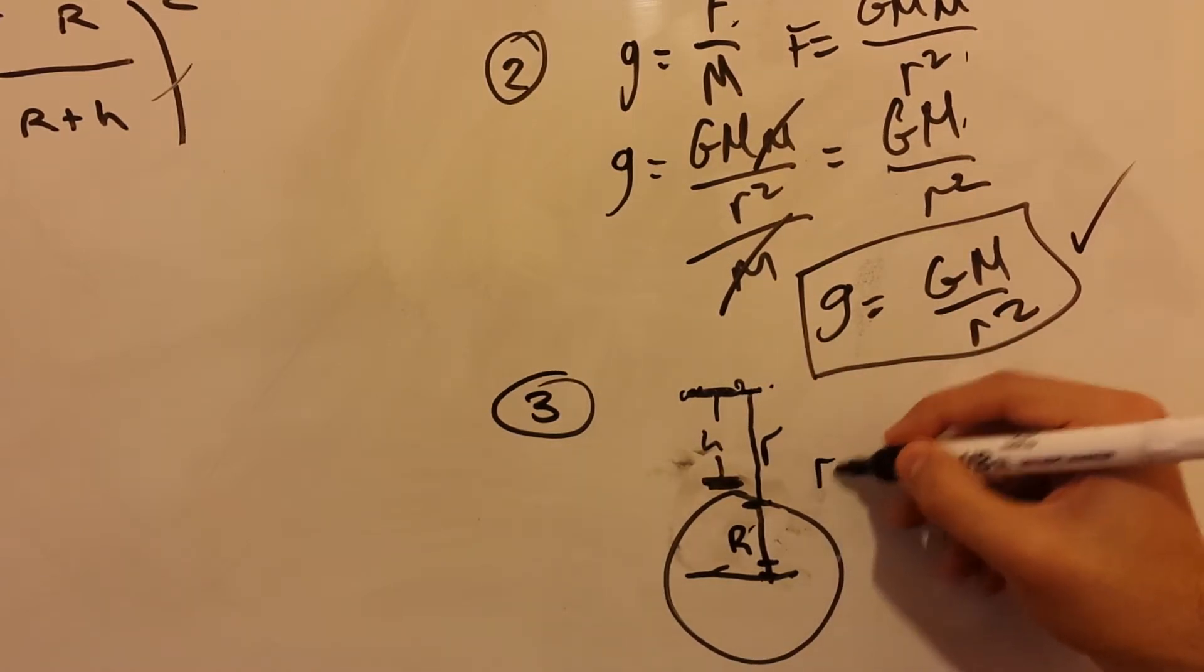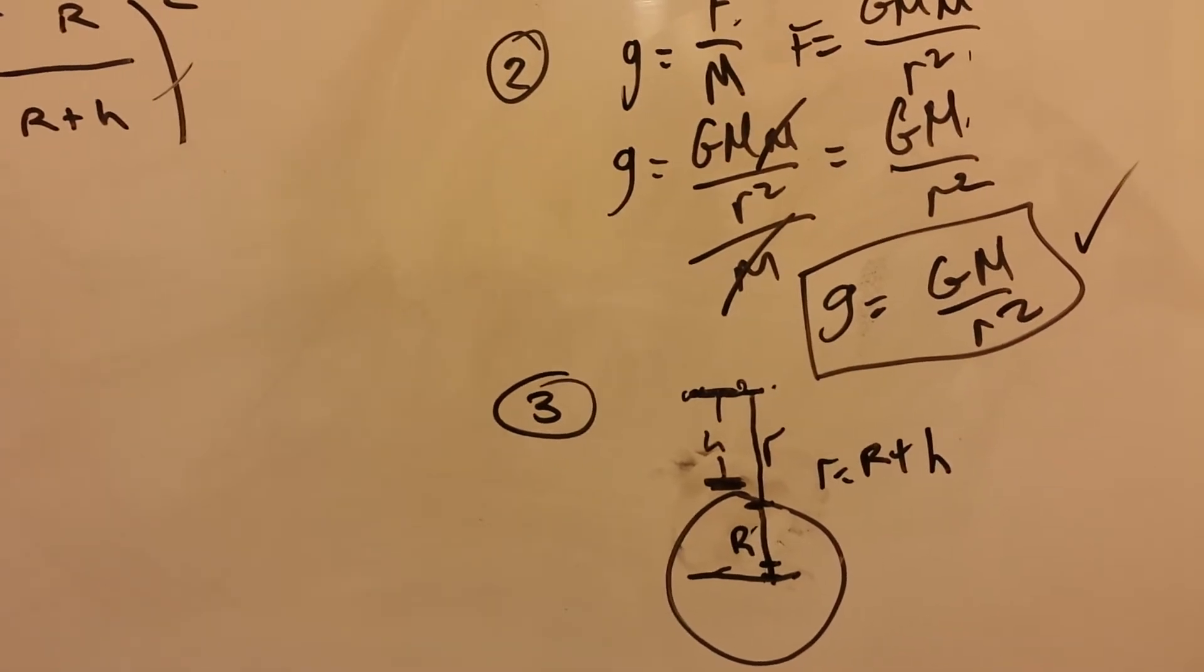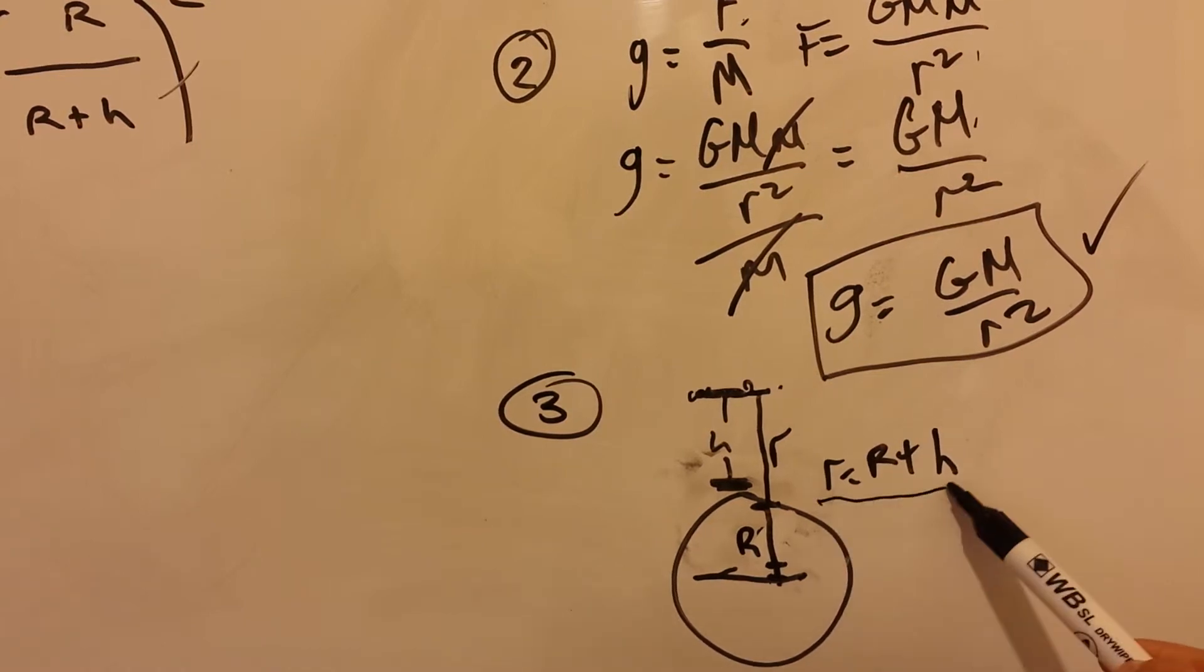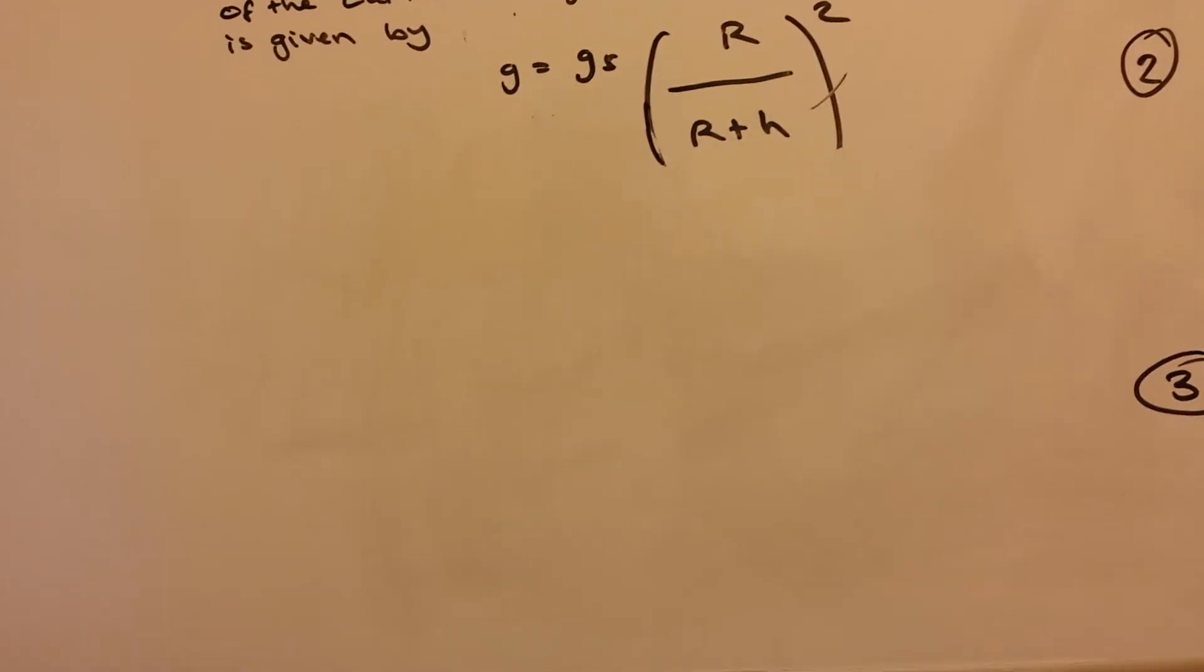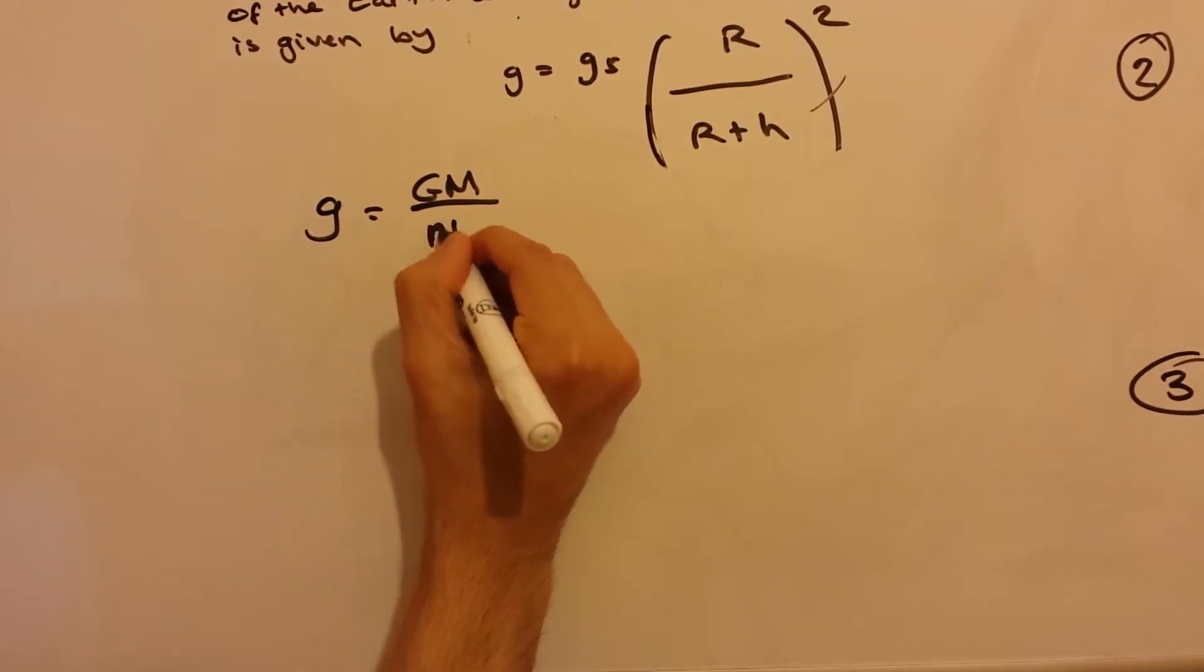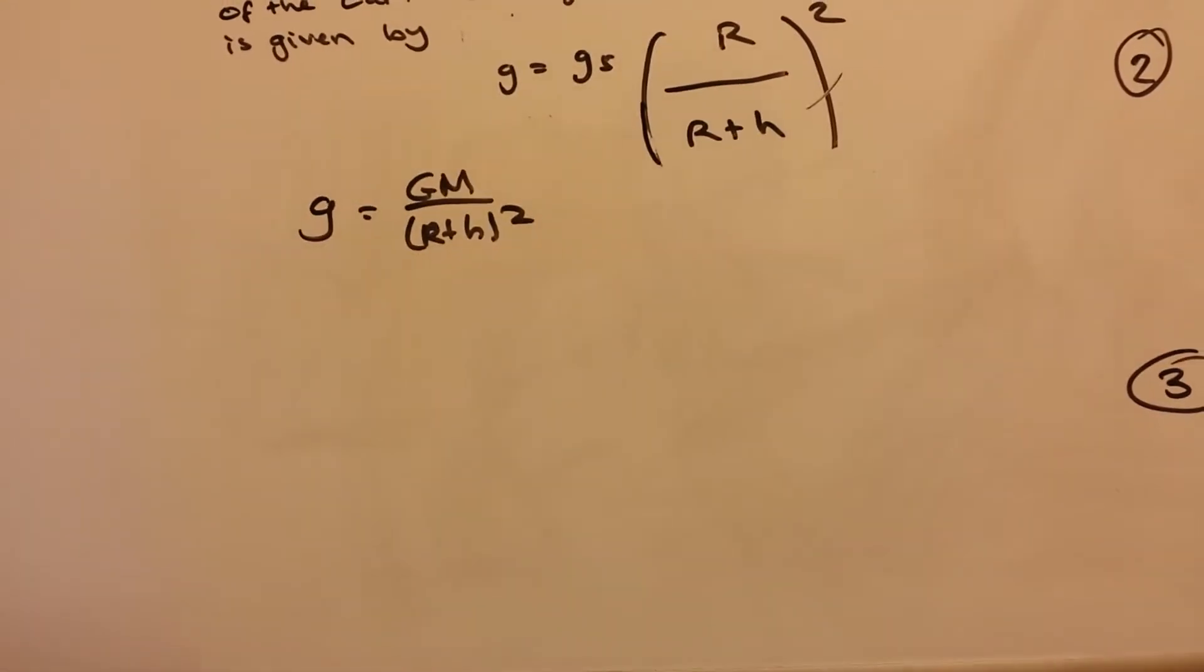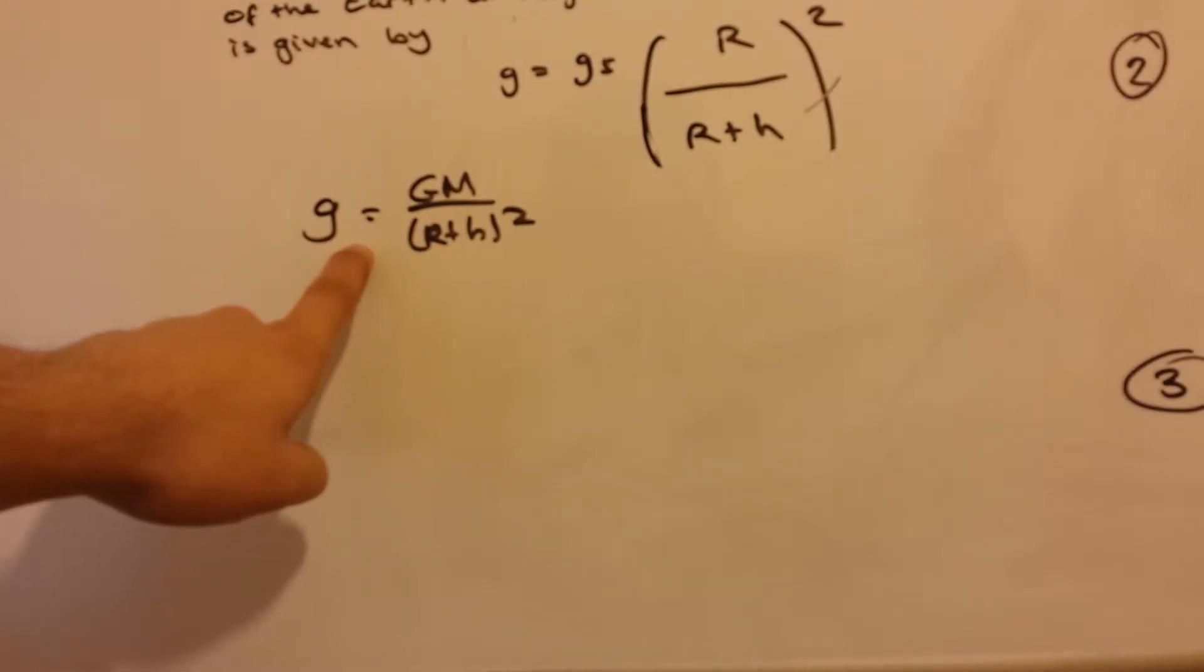So, r is equal to the capital R plus h. So, now let's substitute this into the equation. So, we substitute and we get R plus h. So, that's the gravitational field strength at a height h above the surface.